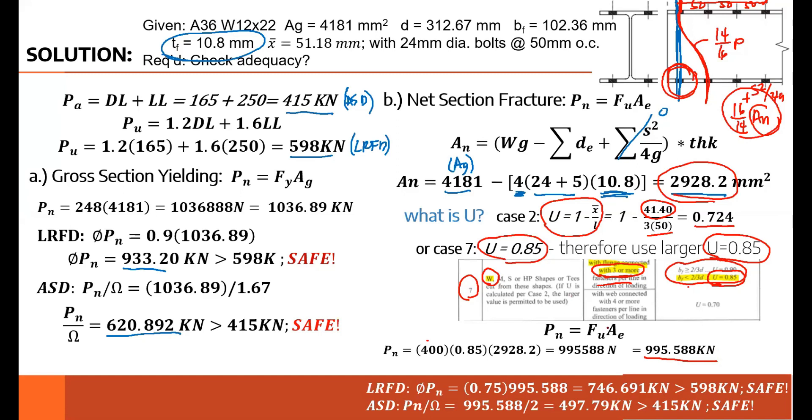Once I have the nominal strength, multiply by the resistance factor and divide by the safety factor to get the design and allowable strength. And if you notice, my design strength for NSF is 746, larger than the ultimate load of 598, so it's safe for NSF. Likewise, for ASD, the allowable strength is 497 compared with the service load of 415, so it's safe under ASD. In both cases, LRFD and ASD, both are safe for NSF. Since it's safe for GSY earlier and safe for NSF, we can conclude that the whole section is now adequate and safe.